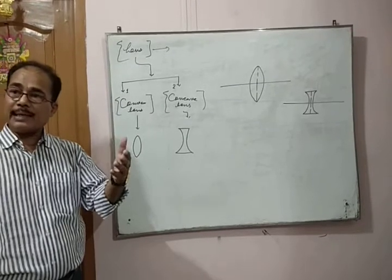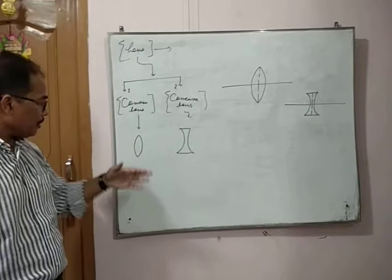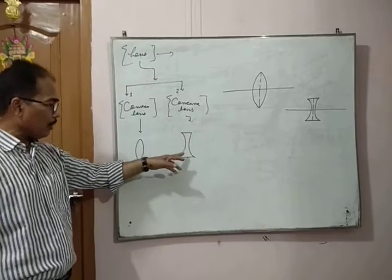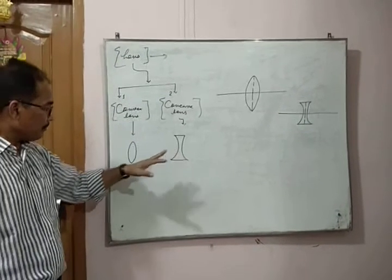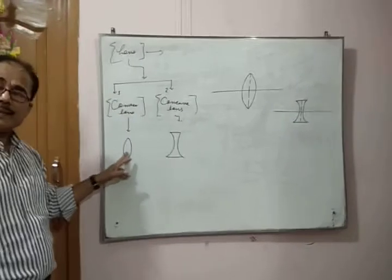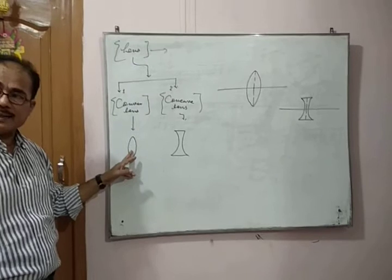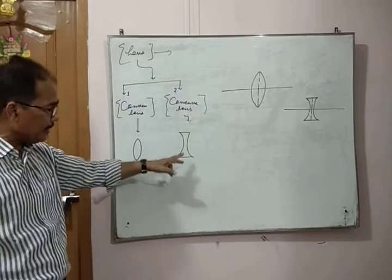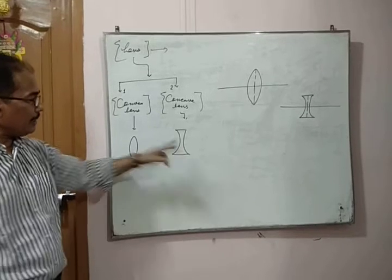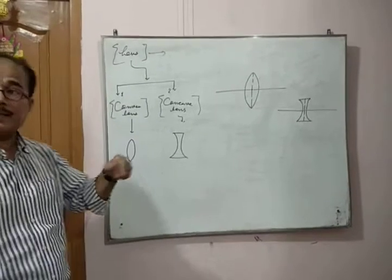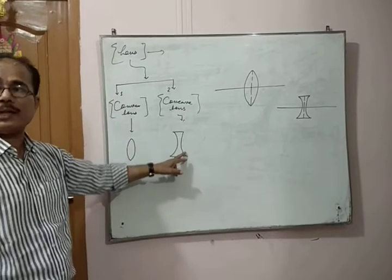Convex lens has mainly three types, and concave lens also has three types. These are the three types of the convex lens. Similarly, double concave lens, plano-concave lens, and convexo-concave lens. But mainly you have to study about the double convex and double concave lens.